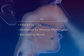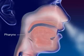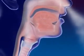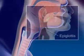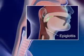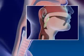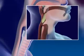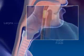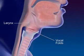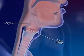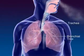Air moves into the pharynx, or throat, the common passageway for food and air. Air continues on to the larynx. The epiglottis, a flap of tissue in front of the larynx, closes off the larynx when swallowing to prevent food from entering. The larynx, or voice box, contains the vocal folds.